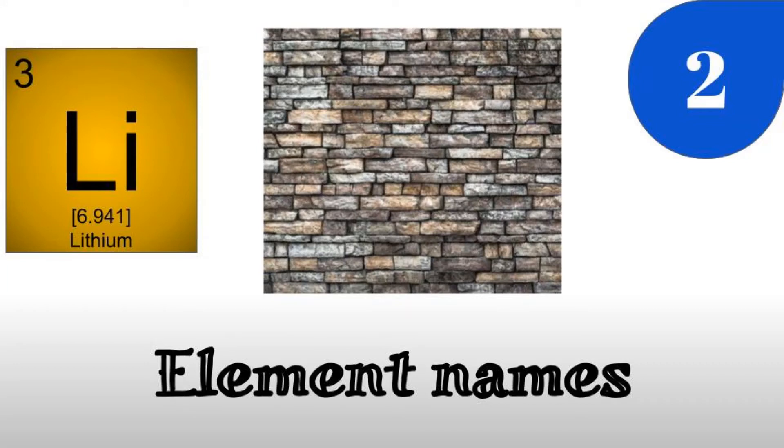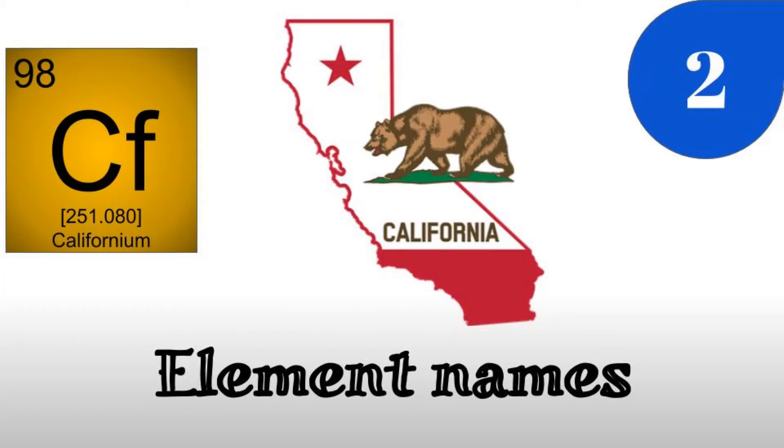Elements can also refer to a place or region, like Californium. Californium got its name because it was synthesized, or created, in the state and university of California.